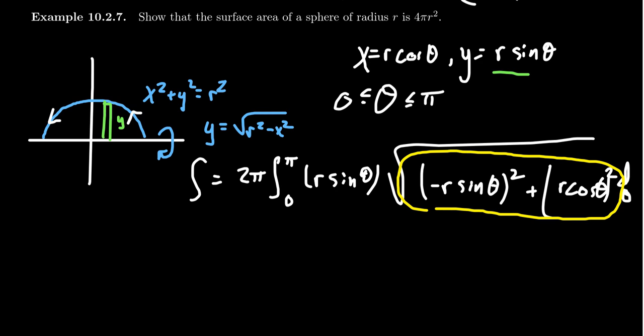All right, so if you bring that out with the other r that's right here, we end up with 2πr² out in front as we integrate from 0 to π of sin θ dθ. That thing simplifies very nicely in this context.